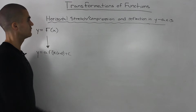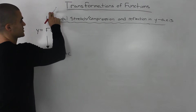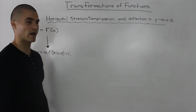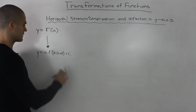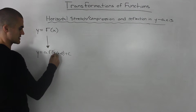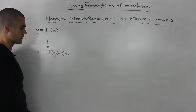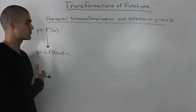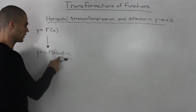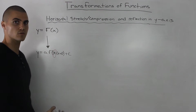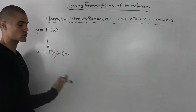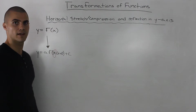Now we're going to talk about when a function undergoes transformations of horizontal stretches and compressions and reflections in the y-axis. The letter that determines those transformations is the k value in the transform function. As we did in the previous video on vertical stretches and compressions, we're going to go over different cases for which the value of k can take, and give a description and an example for each case.